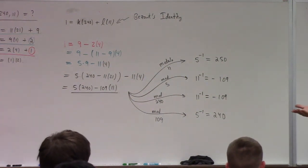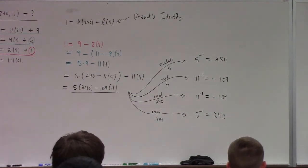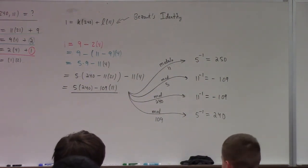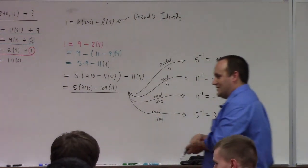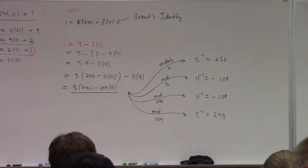So Bézout's identity actually shows us how to calculate inverses in terms of modular arithmetic systematically. Of course for small n you should just guess inverses. Anyway, speaking of wasting time, let me stop wasting your time — that's all I have for today. Thanks, guys.